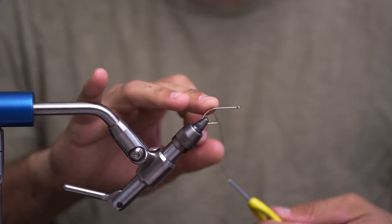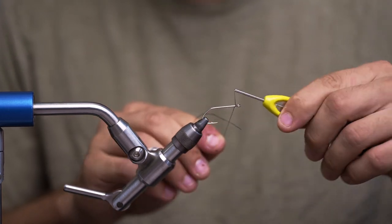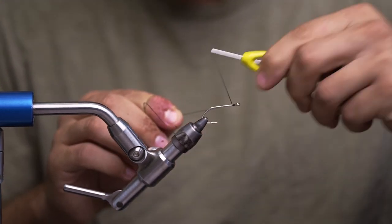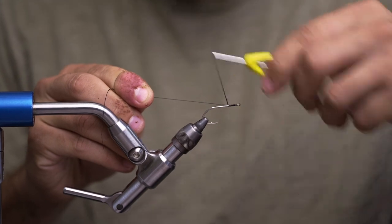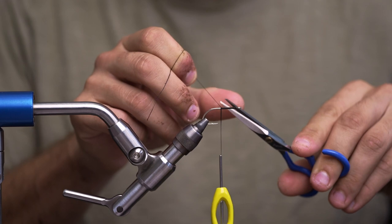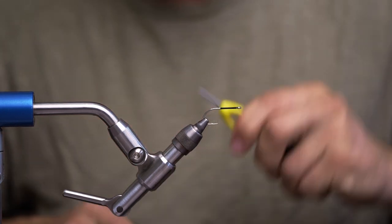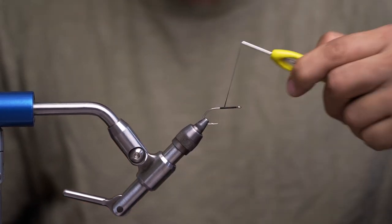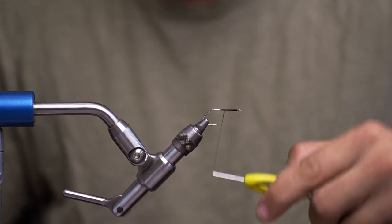First thing I'm going to do is start with my hook in the vise. I'm going to take my thread, start it right behind the eye of the hook, start with a really nice tight thread base, and I'm going to stop probably around a hook eye in front of the point of the hook. I'm going to move my thread back just a hair.